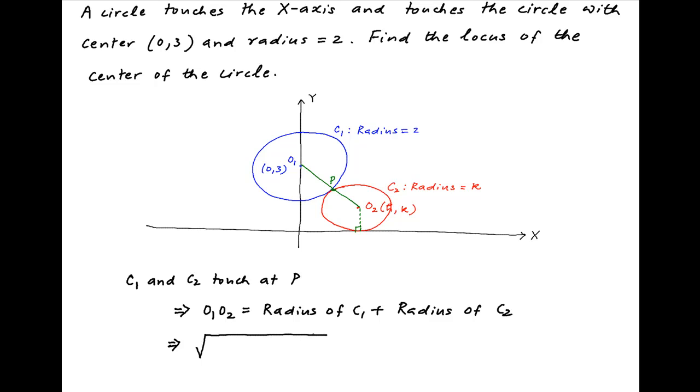Now, the distance between O1 and O2, which is the distance between (0,3) and (h,k), is equal to the square root of (h-0)² + (k-3)².